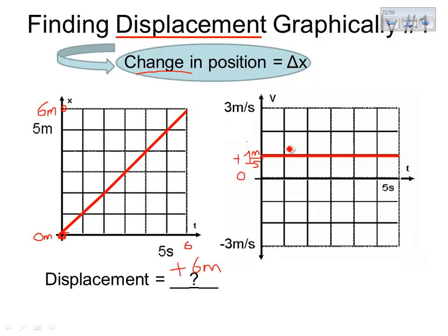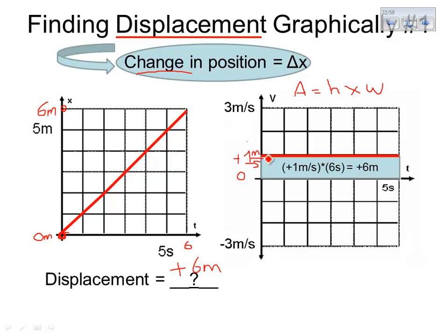The more formal way is to shade in the region between the velocity line and the zero axis — it makes a rectangle. To find the area of any rectangle, you take one dimension multiplied by the other: height times width. The height goes from zero to one, so the height is one meter per second, and the width of our rectangle is six seconds. So height times width: one meter per second times six seconds gives us six meters. The seconds cancel out, leaving just units of meters.